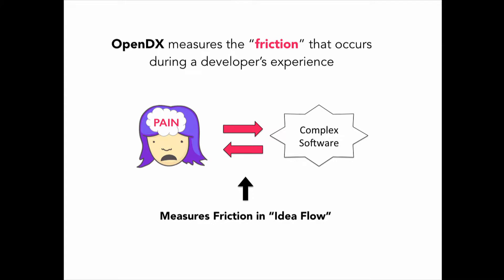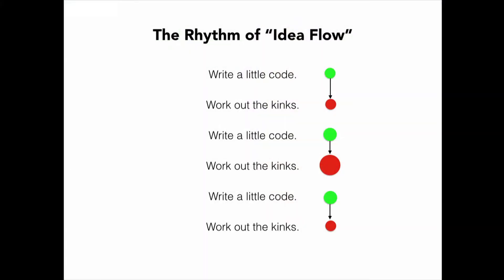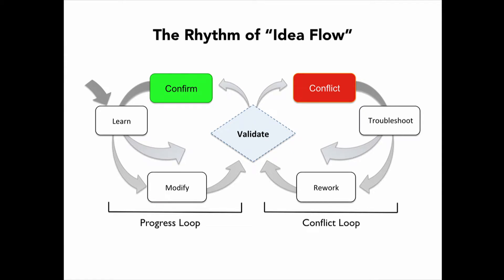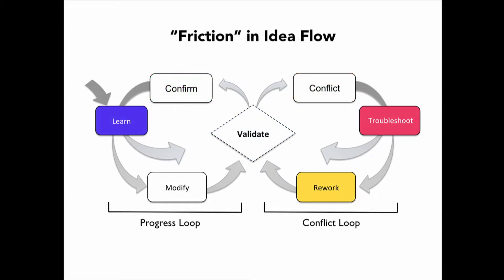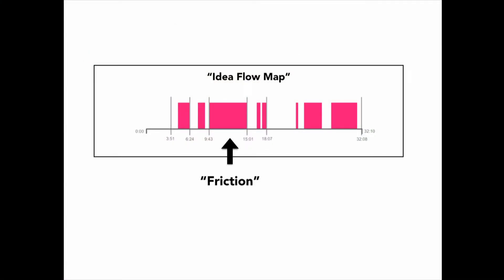OpenDX measures the friction that occurs during a developer's experience — I'm measuring the friction in idea flow. I noticed there's a rhythm to how we code: we write a little code, work out the kinks, and do that over and again. There's this decision point where we're validating the code. If it does what we expect, we write a little more code. If it doesn't, we go down the troubleshooting path. I started tracking these as progress loops and conflict loops. With a progress loop, you can have learning that gets in your way. With a conflict, you have to spend time troubleshooting and potentially reworking your solution. These visualizations I'm calling an idea flow map, and all this stuff I'm calling friction in the timeline.